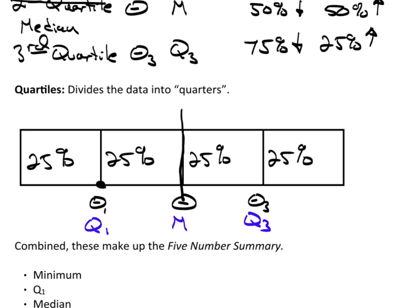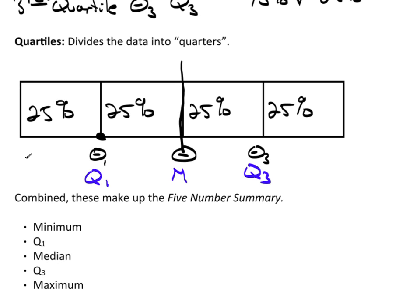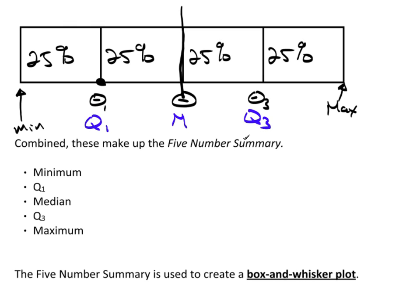Combined, there are five numbers: there would be a minimum value and a maximum value, and together the minimum, the first quartile, the median, the third quartile, and the maximum make up what's known as the five number summary — it's a way of numerically summarizing your data.